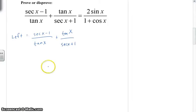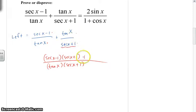And I'm simply first going to find a common denominator, which is tan x times secant x plus one. So I have to multiply this fraction by secant x plus one over secant x plus one, which is secant x minus one times secant x plus one. And I have to multiply this fraction by tangent x over tangent of x. So that's plus tangent squared x.